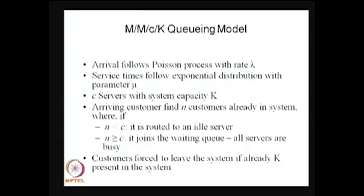Now I am moving into the MMC-K queuing model. The change here is that instead of one server in the MM1 model, you have more than one server C, and you have a finite capacity that is capital K — the capacity of the system.